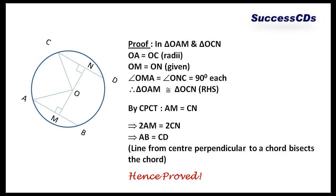By RHS congruency, right angle hypotenuse and any other side congruency, by CPCT I get AM and CN to be equal to each other. If AM and CN are equal to each other, that means 2 times AM will also be equal to 2 times CN. That means AB and CD are going to be equal to each other. Why?